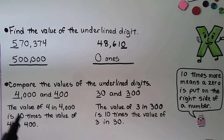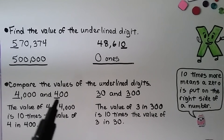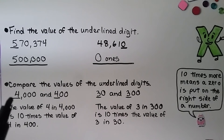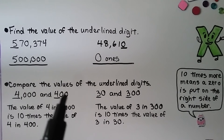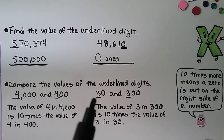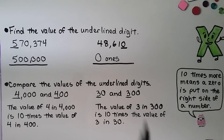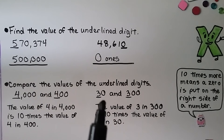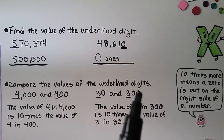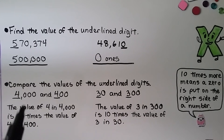Compare the values of the underlined digits. Here we have four thousand and here we have four hundred. The value of the four in four thousand is ten times the value of the four in four hundred — it's ten times more. And look at the three here and the three here: the value of the three in three hundred is ten times the value of the three in thirty. Ten times more means a zero is added to the right side of the number — that's why it has an extra zero.